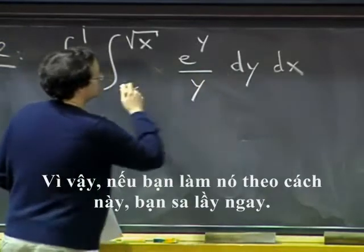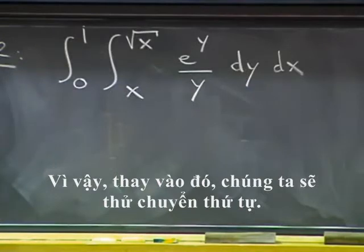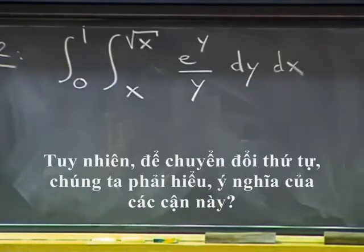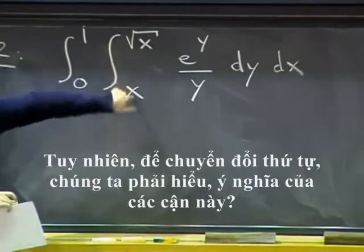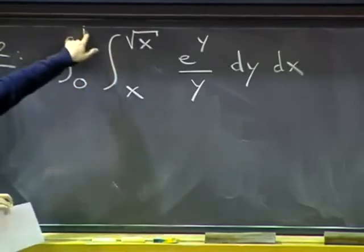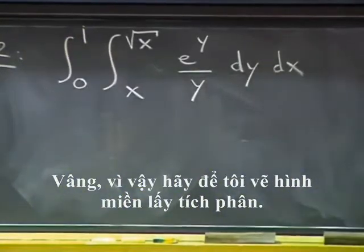So this integral you cannot compute this way. So it is a good example for why this can be useful. So if you do it this way, you are stuck immediately. So instead, we will try to switch the order. But to switch the order, we have to understand what do these bounds mean.